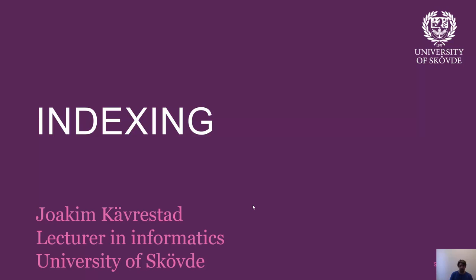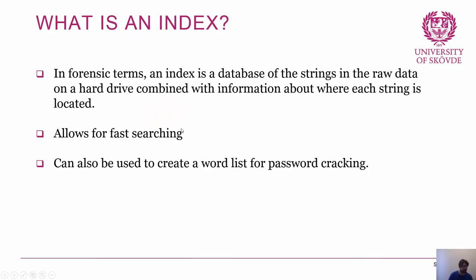What we're going to begin with is to talk a little bit about indexing. Indexing is basically a pre-processing task — a task that you do when you set up your case. In forensic terms, an index is a database of the strings in the raw data on a hard drive, combined with information about where each string is located. When you get to work on a computer, you extract a hard drive, do a forensic disk image, and then when you start working your case you can begin with creating an index.